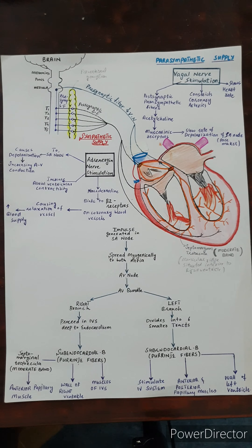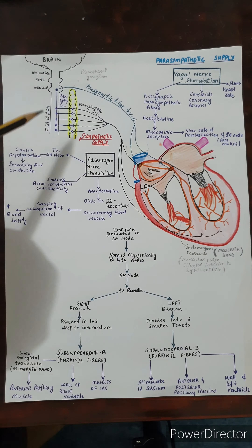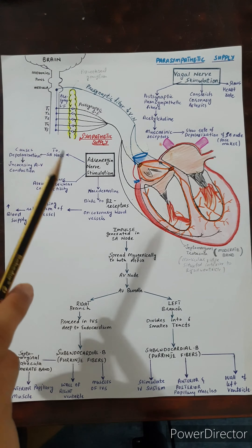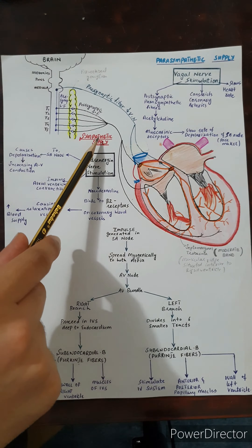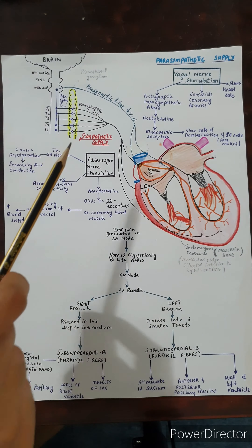Now we will discuss the innervating system of the heart. The heart is supplied by the autonomic nerve fibers of the cardiac plexus. These autonomic fibers contain both sympathetic and parasympathetic fibers.